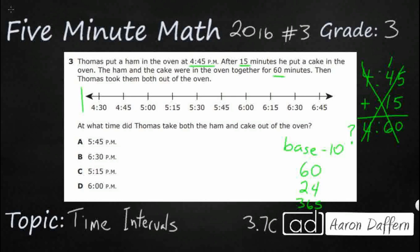So this is going to be our tool that we're going to use right here. Just a basic timeline. So let's mark this. Thomas put a ham in the oven at 4:45. So I'm just going to write ham right here. This is where he put the ham in the oven. Put a little X.